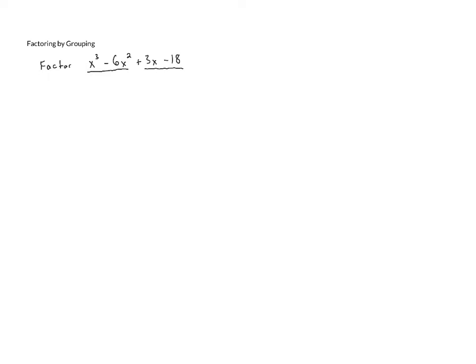So first, let's look at x³ - 6x², and let's pull out the GCF there. We notice that x³ and 6x² both contain an x², so we factor out the x², and when we do that, we're left with x and then minus 6.